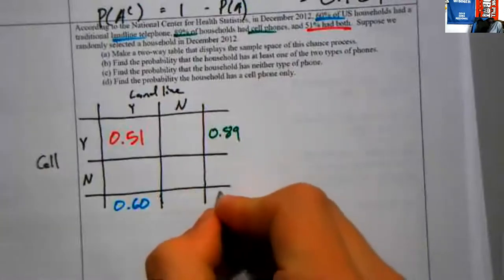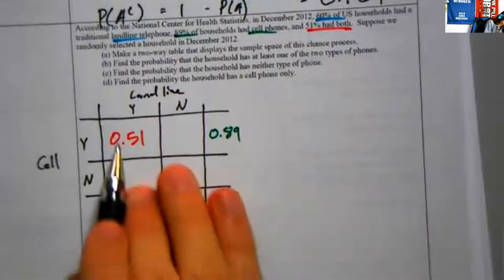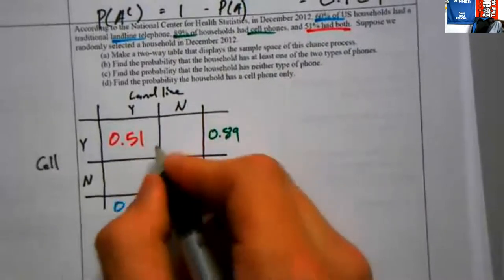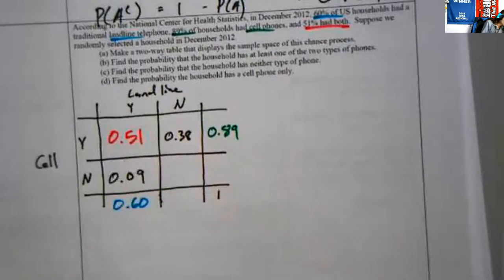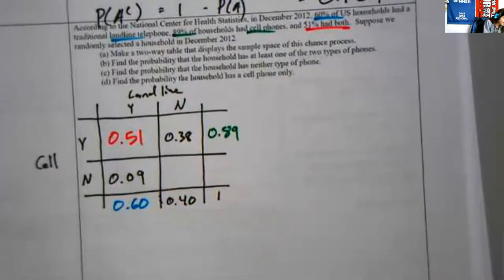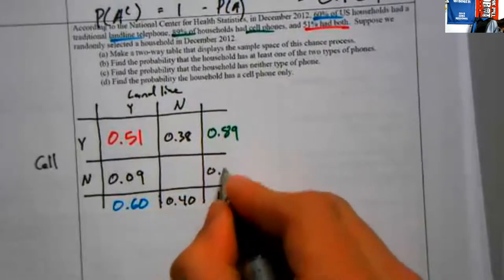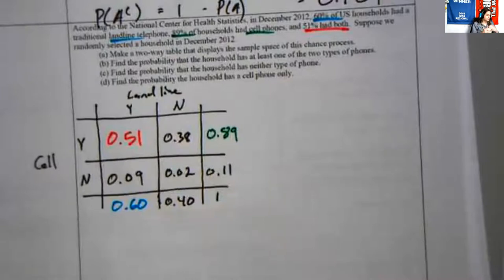These are all going to add up to one. So we can do some math to figure out every other number. There are 89% total with a cell phone and 51% accounted for with both, so that means 0.38 had a cell phone but no landline. There are 60% with a landline, 40% without. 89% with a cell phone, 11% without. And those with no phone at all — that's 2% of folks. So we've made our two-way table, using colors to show which numbers came from the text and which came through subtraction.